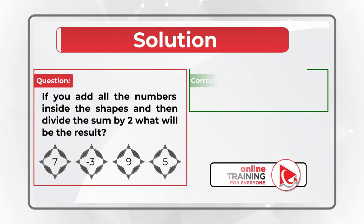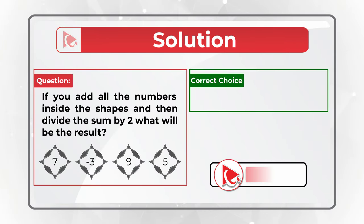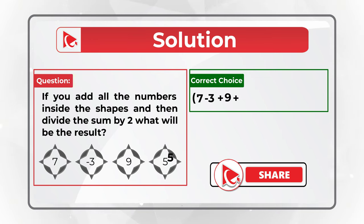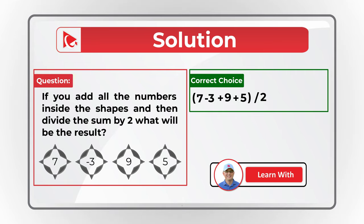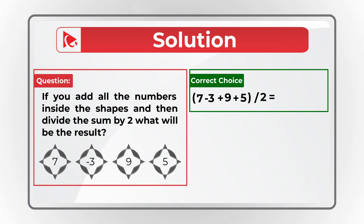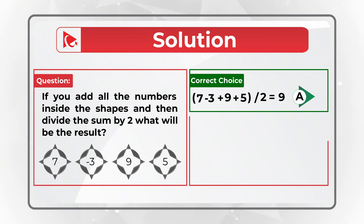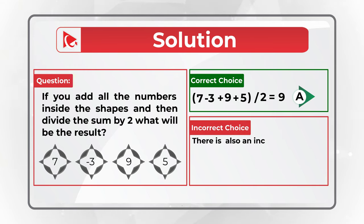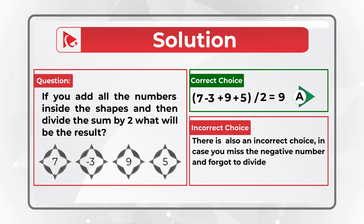The math here is pretty straightforward. You need to do 7 minus 3 plus 9 plus 5 in parentheses, and then divide the sum by 2. The result would be 18 divided by 2, which equals 9. And this is my choice for the correct answer.